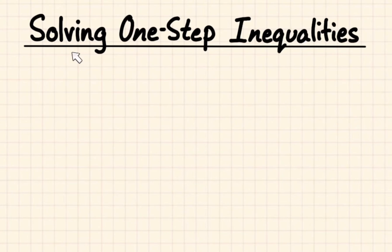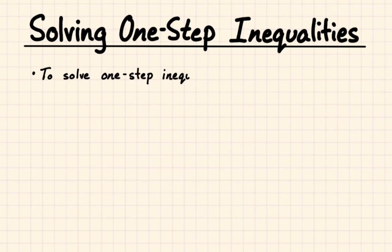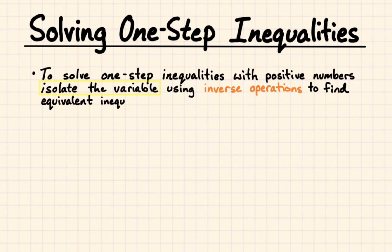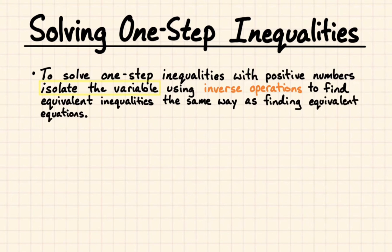We're going to go over notes on solving one-step inequalities with eight examples and talk about what we're looking for when we solve one-step inequalities. To solve one-step inequalities with positive numbers, isolate the variable using inverse operations to find equivalent inequalities the same way as finding equivalent equations. Let's look at what that looks like with some examples.